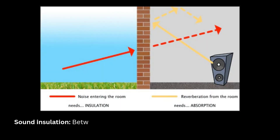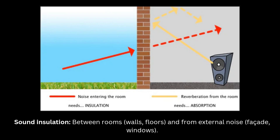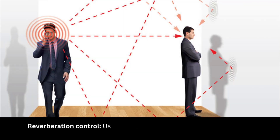Sound insulation: between rooms, walls, floors, and from external noise via façade and windows. Reverberation control: use materials that absorb sound in living areas.